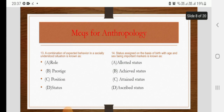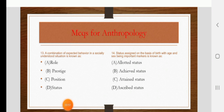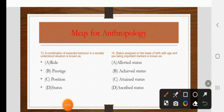A combination of expected behavior in a socially understood situation is known as role, prestige, position, or status. The correct answer is role.